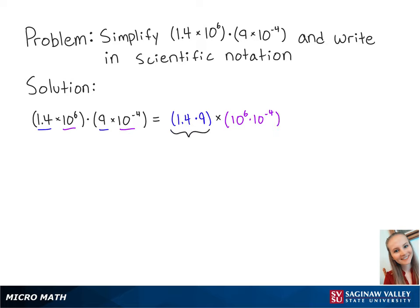1.4 times 9 is equal to 12.6, and we can use our exponent rules to see that 10 to the 6 times 10 to the negative 4th is equal to 10 to the 6 minus 4, which equals 10 squared. So all of this is now equal to 12.6 times 10 squared.